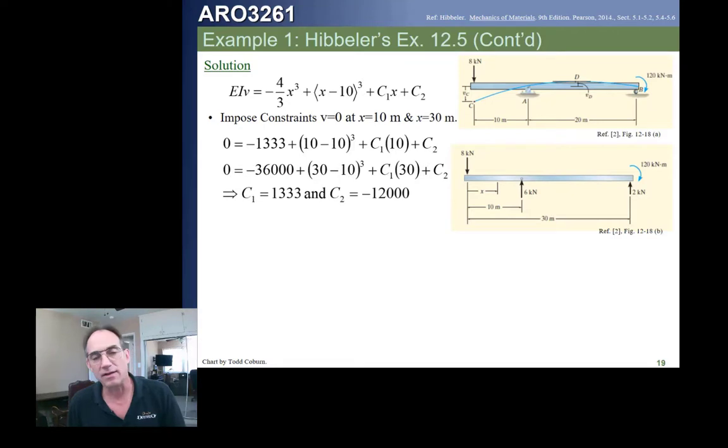We then can go and look at our boundary conditions. You'll notice that the deflection y is actually shown as v here. This is Hibbeler. That's the nomenclature he uses. So we just see v here, the little v is simply the deflection. So we plug in our constraints that at x equals 10 we have no deflection, and at x equals 30 we have zero deflection, and that gives us our two constraints, our two constants of integration.